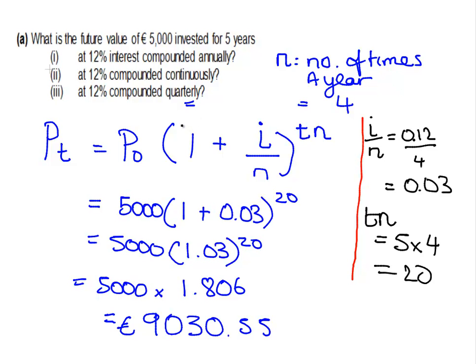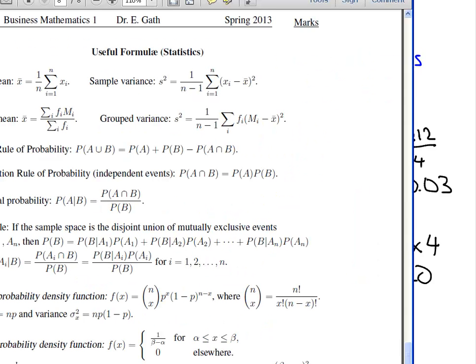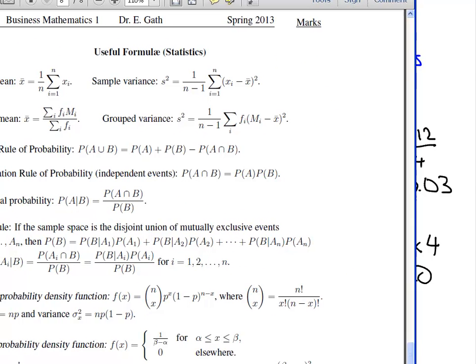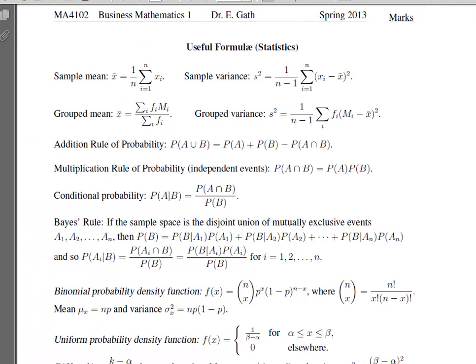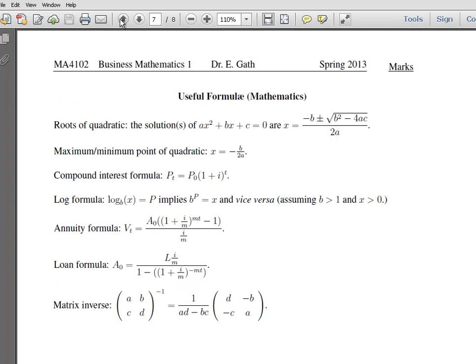So again, the important thing to remember here is the formula at the back of your exam paper. I'm just going to bring up the formula at the back of the exam paper here for a second. So this is the statistics page. And there's the compound interest formula there. You'll notice it's the only one you're given. So just be mindful of what you're given in the back of the exam paper. That's the end of this presentation. I'll see you next time.